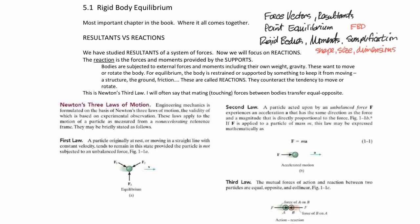We're going to talk about a variety of supports today. Bodies are subjected to external forces, including their own weight caused by gravity. They may want to move or rotate the body, and the body is restrained or supported — either by the ground, a structure, or perhaps friction. All of these things are called reactions. They counteract the tendency to move or to rotate.